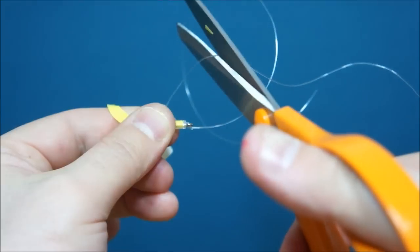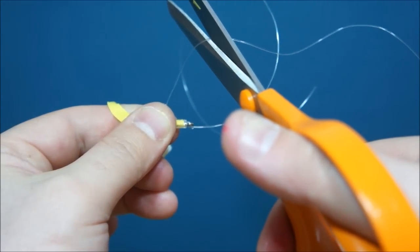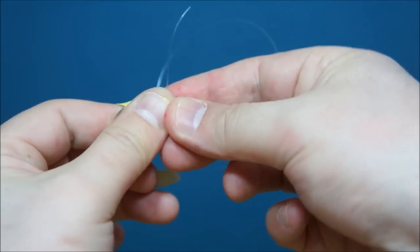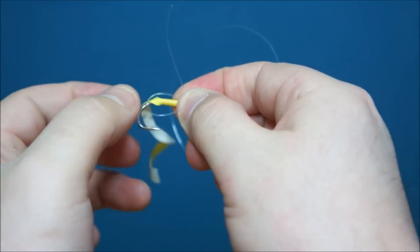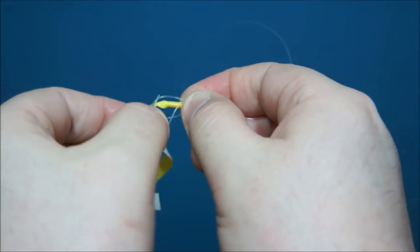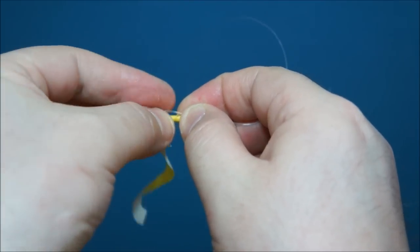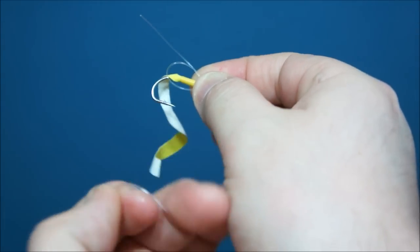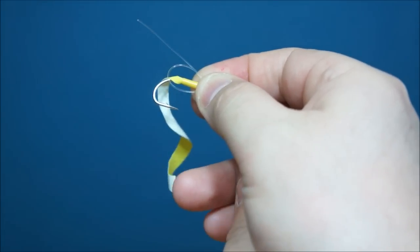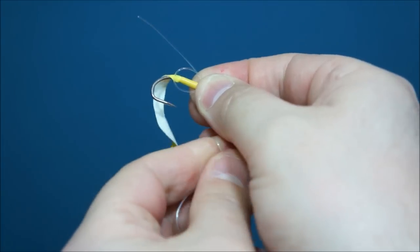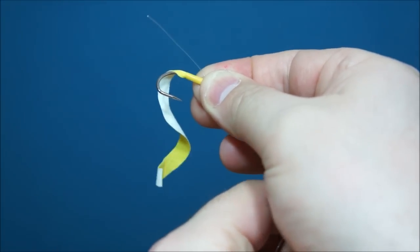So I'm going to trim this line back to the spool. Change hands. And now my new tag end I'm going to push through that loop there. And then it's just a case of gently pulling my other end to close up the knot.